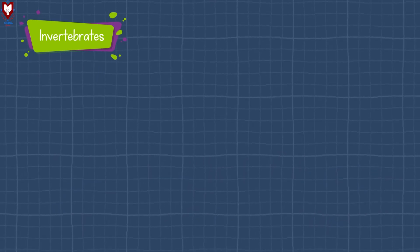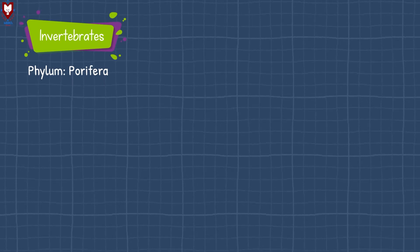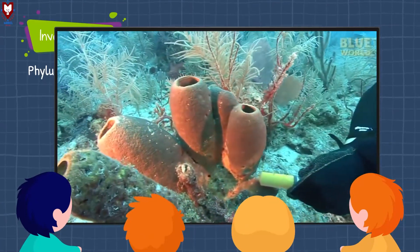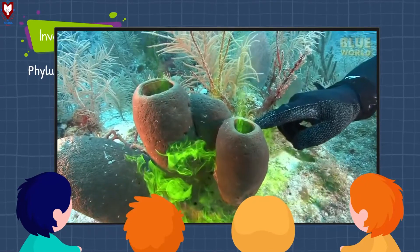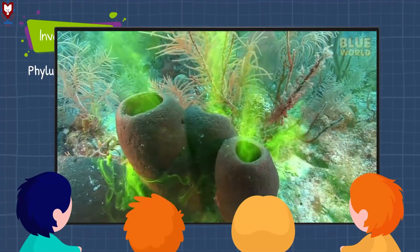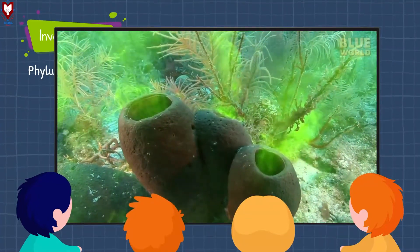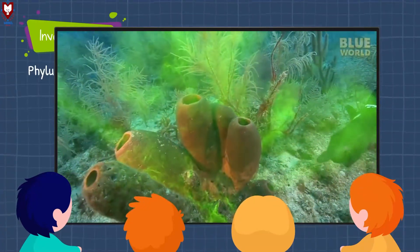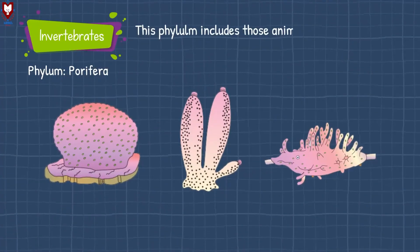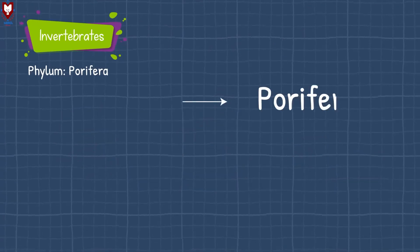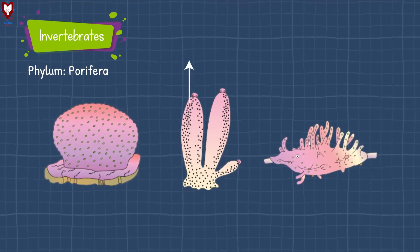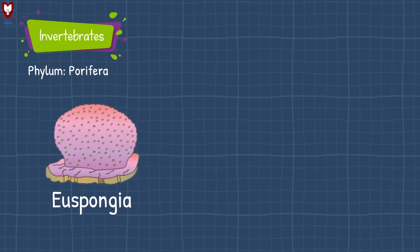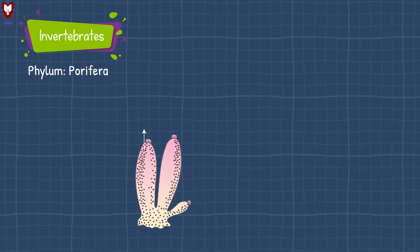There is another phylum — phylum Porifera. Let's watch a video first. You can see this animal is a sponge. How beautifully it releases fluid from the hole at the top of its body. This phylum includes those animals which bear pores on the body. Porifera is a Latin word meaning pore-bearing. Therefore, all animals in this phylum have pores on the body.